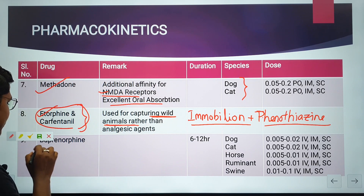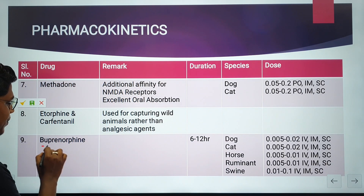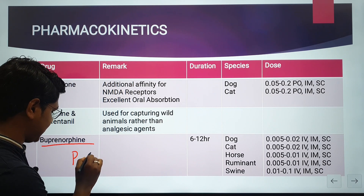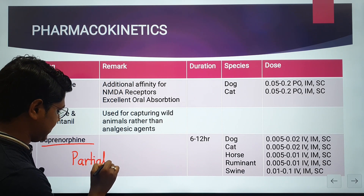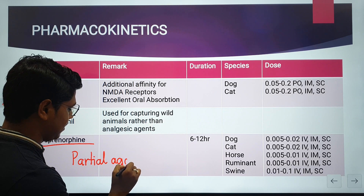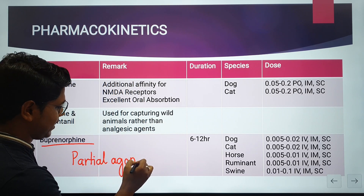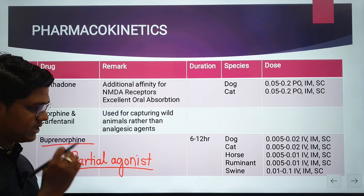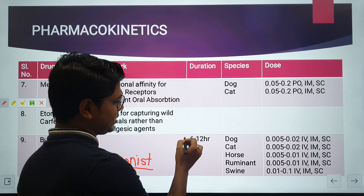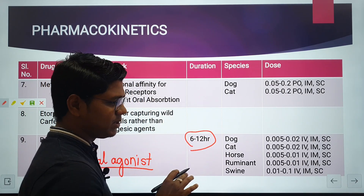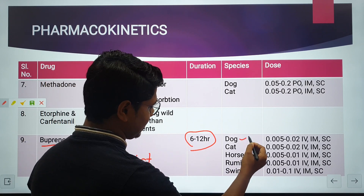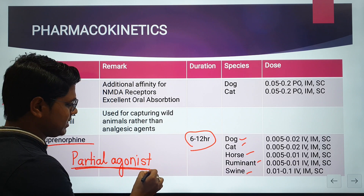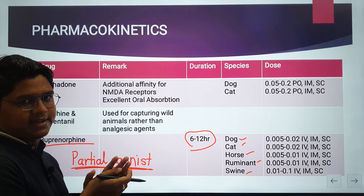Next is buprenorphine, a partial agonist. Duration of action is 6 to 12 hours. It has been used in many species: dog, cat, horse, ruminant, and swine. Being a partial agonist, it has fewer side effects compared to pure agonists.